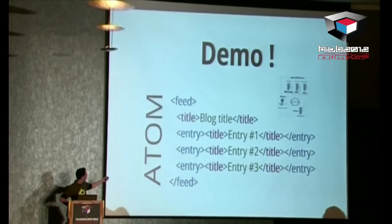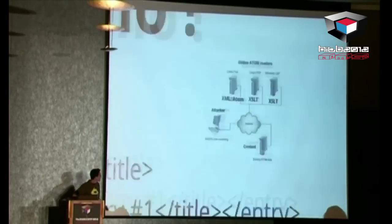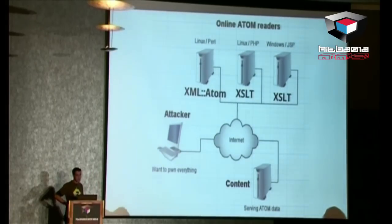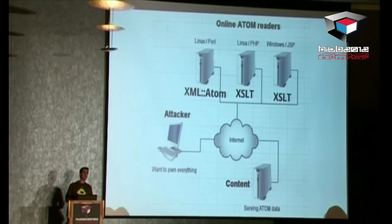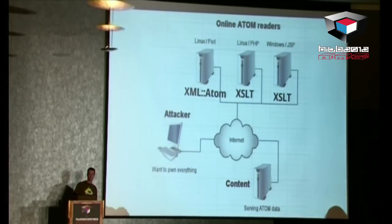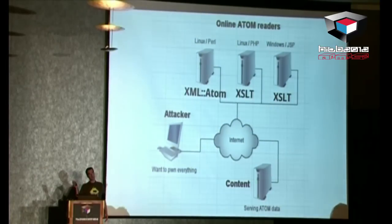All the demonstrations are based on Atom feeds — a simplified view where you have a root feed tag, a title, and for each entry another title. The demo infrastructure has three server-side applications: one using Perl under Linux, one using PHP under Linux with XSLT formatting, and one under Windows using JSP and XSLT. The Atom content is provided by an uncontrolled server on the internet. That's a local copy of the Atom feed from the US-CERT.